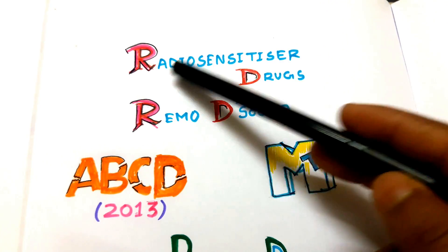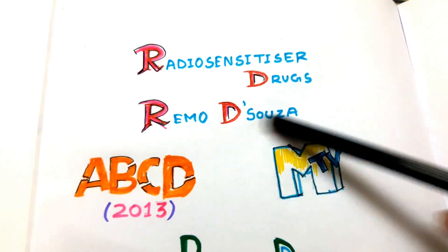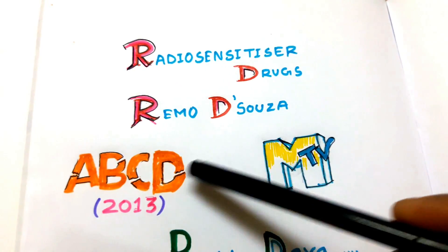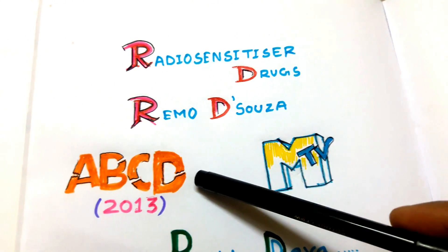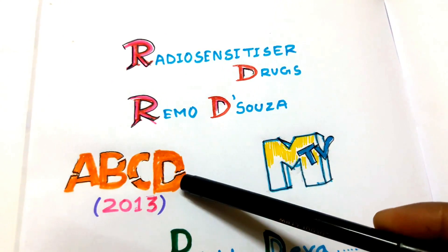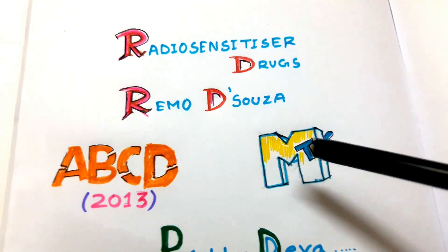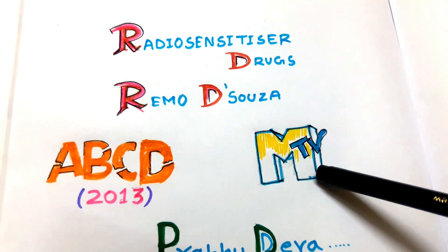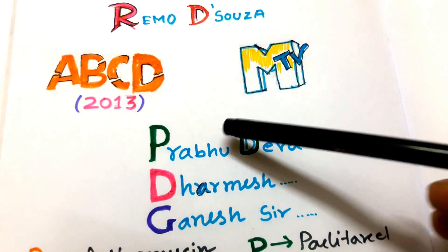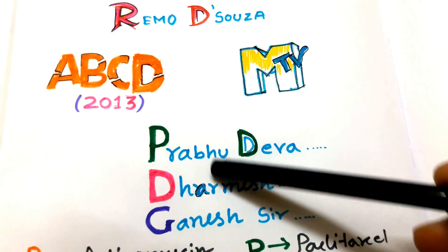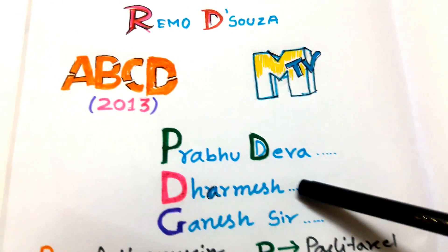Ramo de Souza's contribution was the 2013 ABCD movie, and this movie's TV premiere was done on MTV channel. The star cast of this movie includes the famous choreographers Prabhudeva, Dharmesh, and Ganesh Acharya.